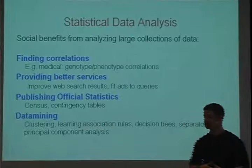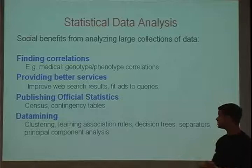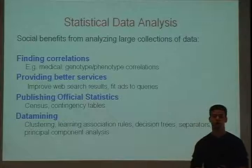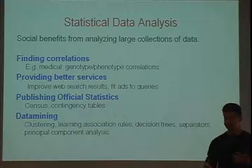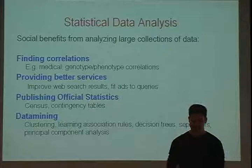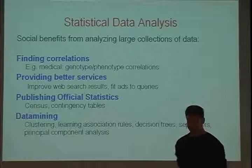Statistical data analysis comes with tremendous social benefits. We can do things like finding correlations between genes and diseases — analyzing a large collection of statistical data to find out which gene causes what disease. We can provide better services from a computer science point of view: improved search engines, improved web search results, or fitting ads better to a user's queries. We do all sorts of legally mandated statistical analysis, for example running censuses, and all sorts of data mining to get a lot of information from large collections of data about individuals.